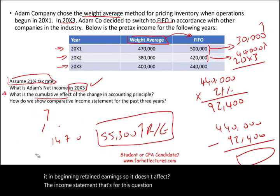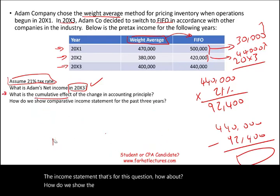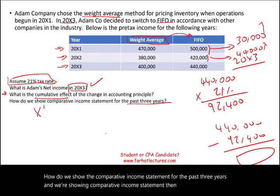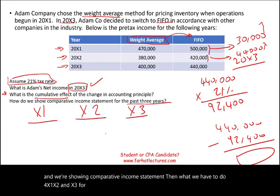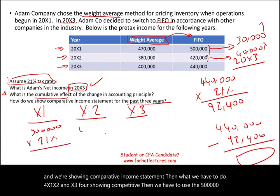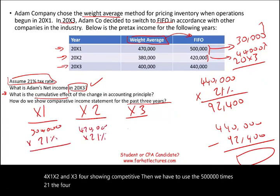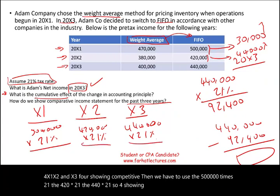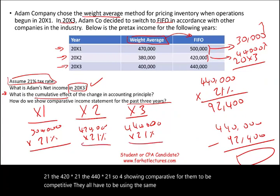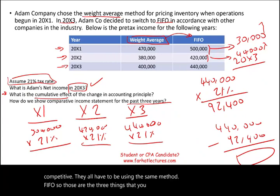If we're showing a comparative income statement for the past three years, we use the FIFO figures for all three years: 500,000 times 21% for X1, 420,000 times 21% for X2, and 440,000 times 21% for X3. For comparative statements, all years must use the same method — FIFO. This is how you deal with changes in accounting principle.